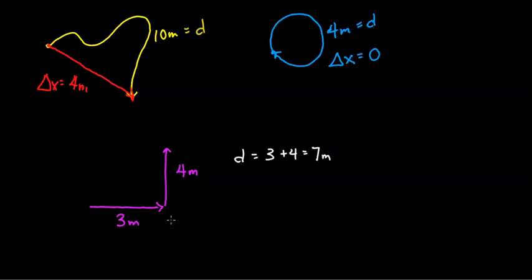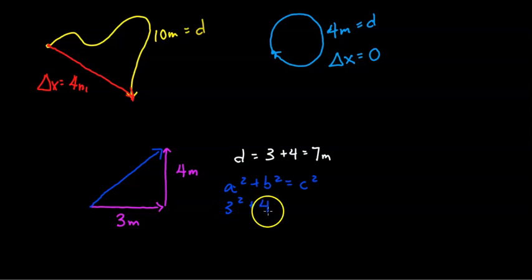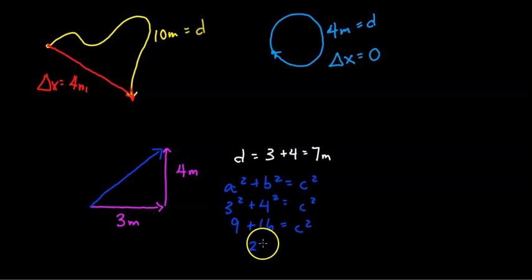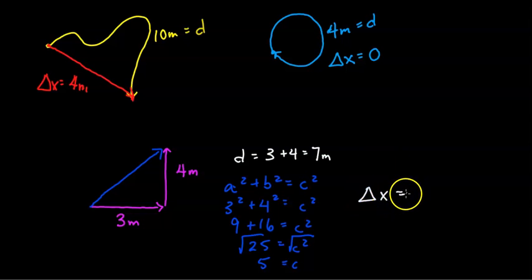The displacement is your change in position — from start to end, that's the shortest straight-line path. It doesn't matter how you got there. For this, we use the Pythagorean Theorem: A squared plus B squared equals C squared. So 3 squared plus 4 squared equals C squared. That's 9 plus 16 equals C squared, so 25 equals C squared. Taking the square root of both sides, C equals 5. So the displacement, delta x, is 5 meters.